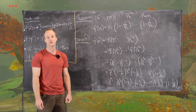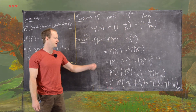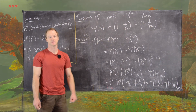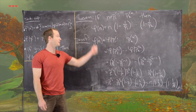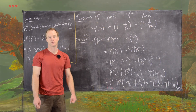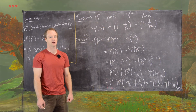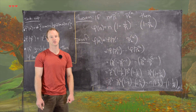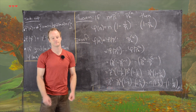I'll do another video where we do some examples of this. But now we have a formula for Euler's phi function on any natural number given its prime factorization.